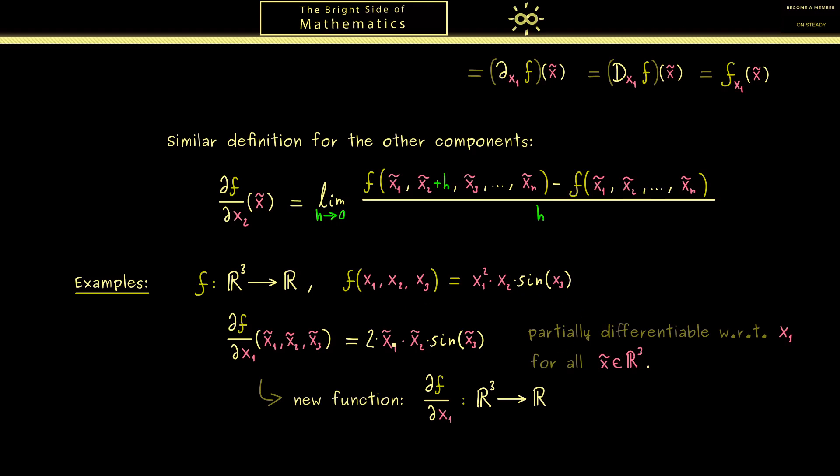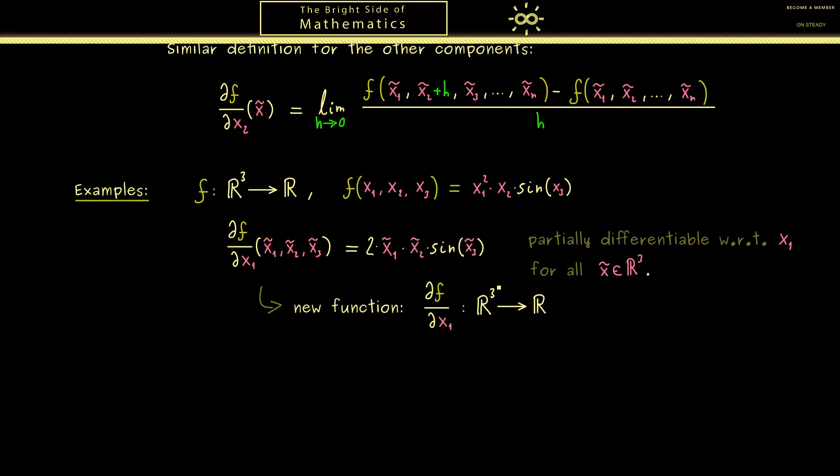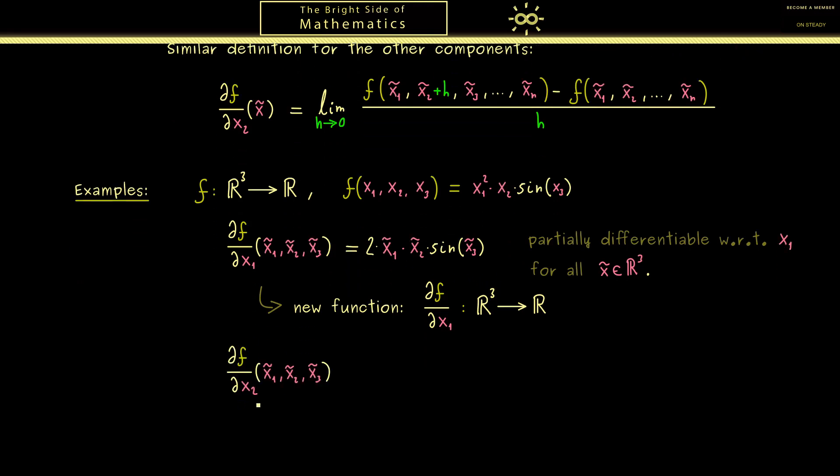Okay, then for the rest of the video let's consider the partial derivatives with respect to x₂ and x₃. Now with respect to x₂ you see we have a linear function where the constant is x₁²sin(x₃). And there of course you know the derivative is just this constant then. However, because we put in x̃ as the point, we have tildes above the components as before. So you see the whole thing here is not complicated at all if you already know how to calculate ordinary derivatives.